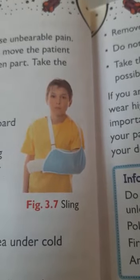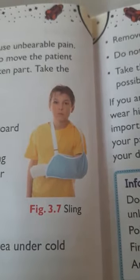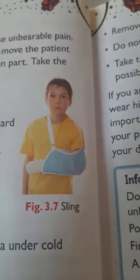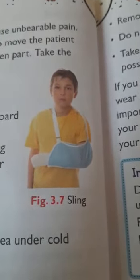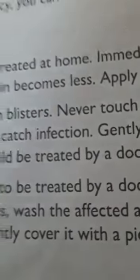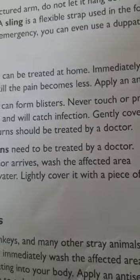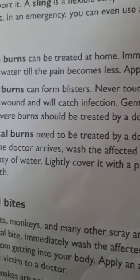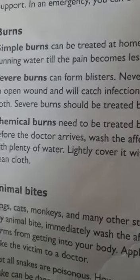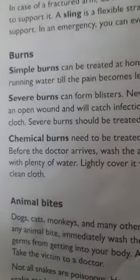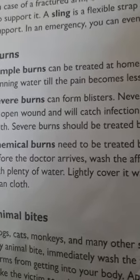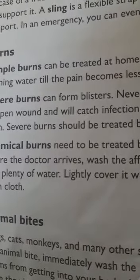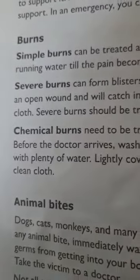You can use a newspaper, magazine, or cardboard as a splint. In case of a fractured arm, do not let it hang down. Instead, use a sling to support it. A sling is a flexible strap used in the form of a loop for support. In an emergency, you can even use a dupatta or any other cloth for tying as a sling.